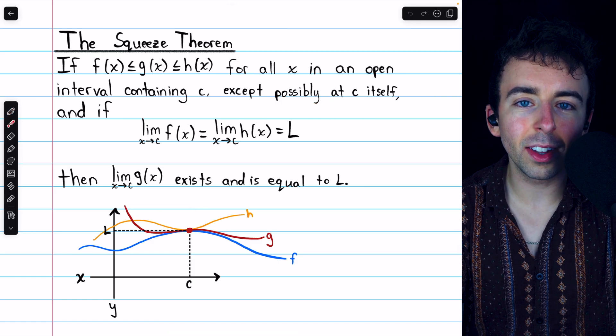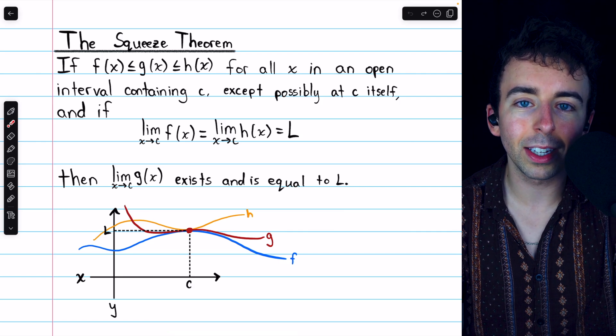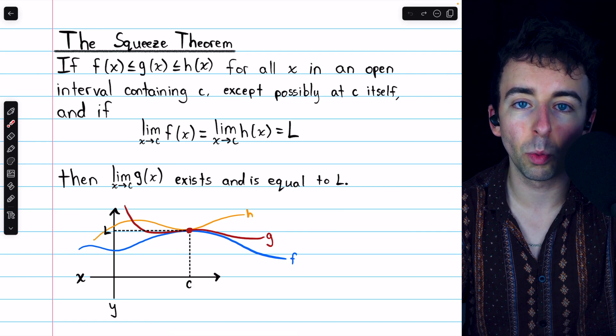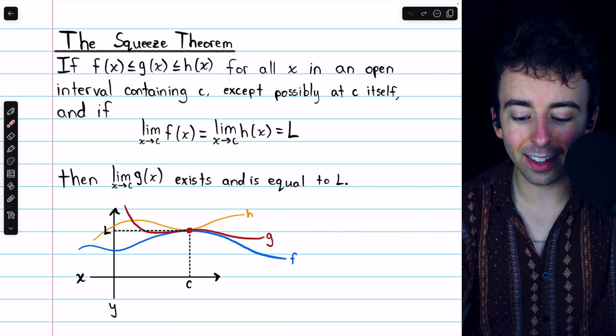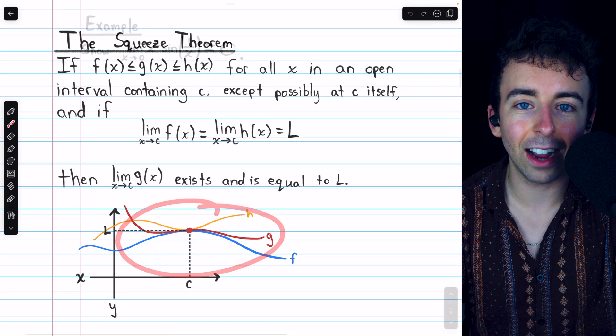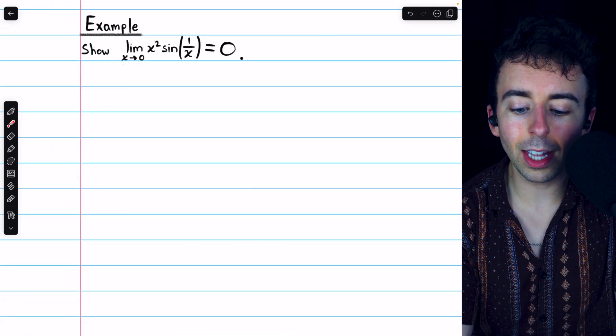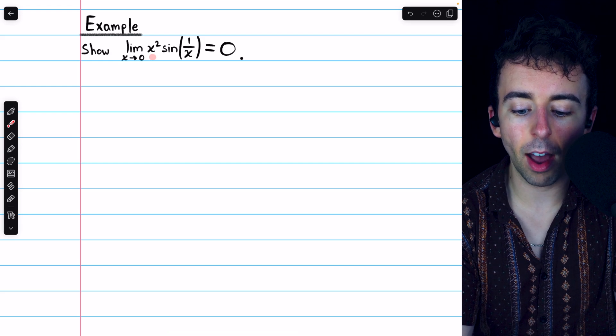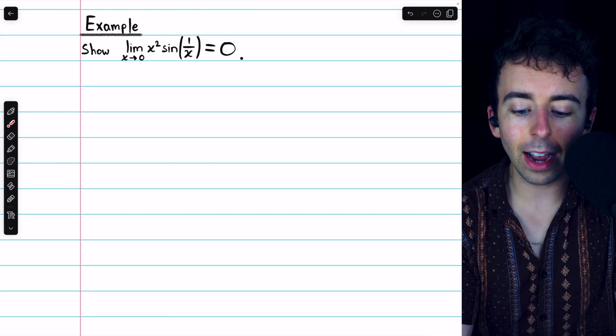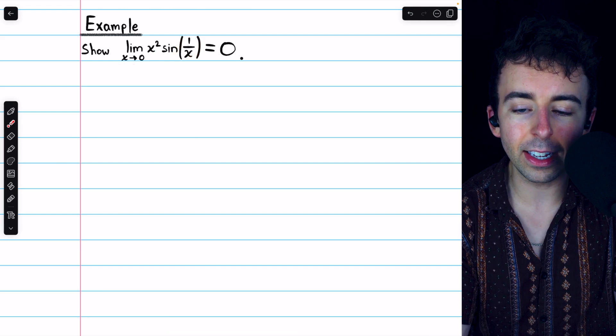Now, let's try using this theorem to prove some simple limits, and we'll also look at some graphs of the functions we're discussing, and again, see this sort of behavior in action. First, we'll show that the limit of x² times sin(1/x), as x approaches 0, is equal to 0.